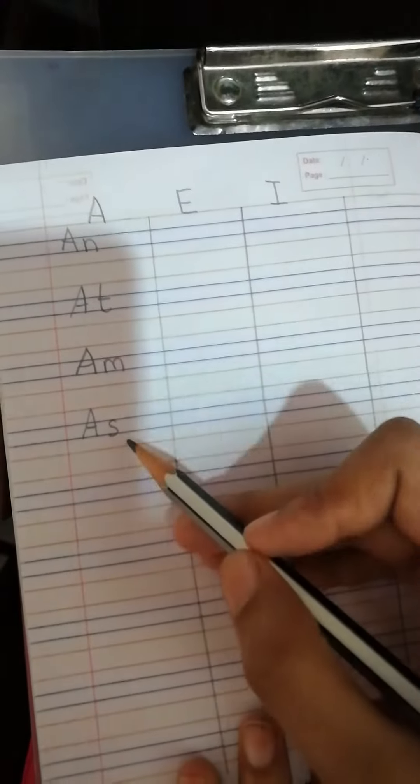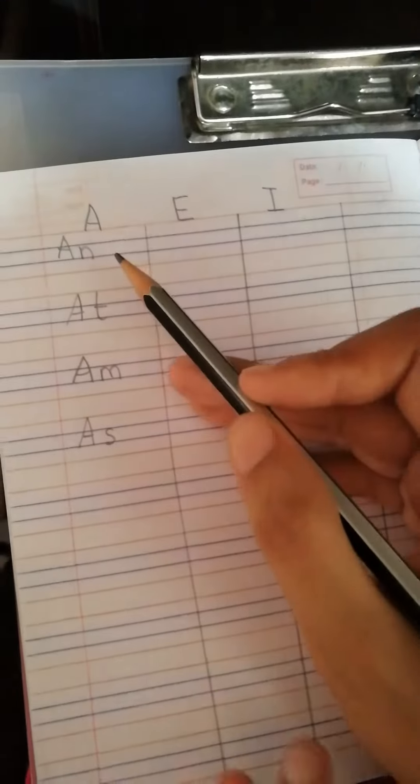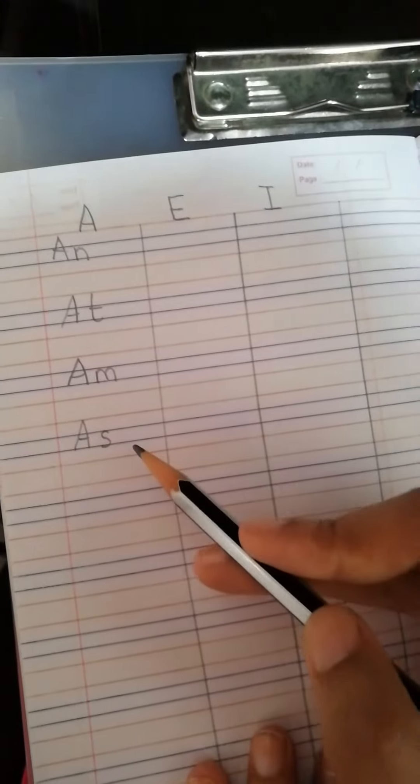Okay. We have learnt four words that start with the vowel A: an, at, am, and as.